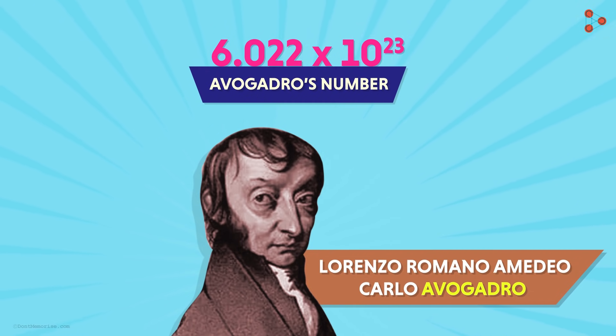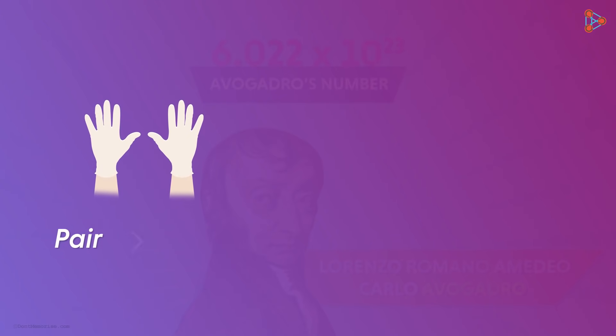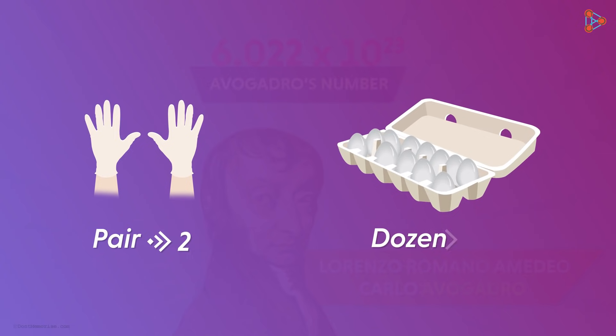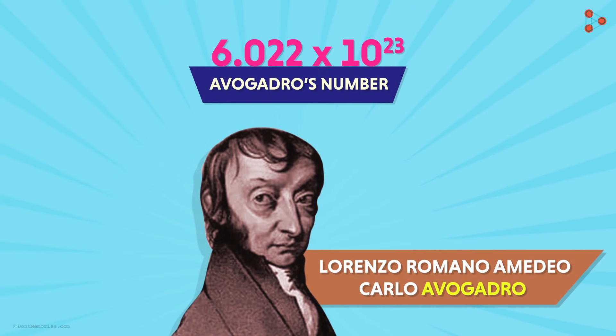It is just a number used to represent quantities. It's similar to how we use the word pair for 2 or the word dozen to represent 12. Similarly, Avogadro's number is the term used to represent 6.022 times 10 raised to 23 number of any entity.